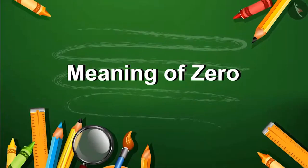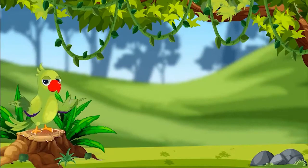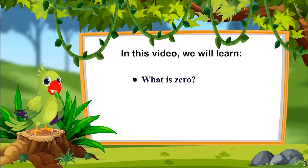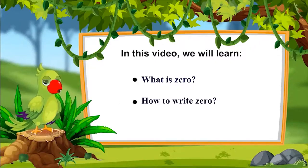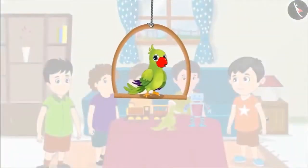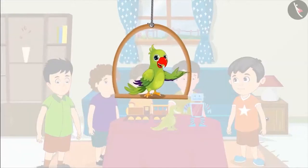What is the meaning of zero? Hello, I am the parrot. Welcome to this lesson. Children, let us see what we will learn in this video: we are going to learn what zero is, which number is left when all things disappear one by one, and how do we write zero. Today, four of Chotu's friends have come to play at his house, but it is getting dark and his friends are leaving one by one.